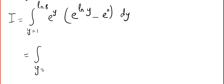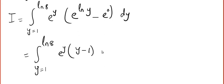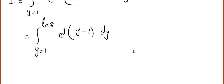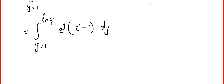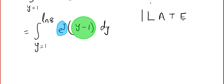That becomes the integral from y=1 to ln8 of e^y. Now, e and ln together create the identity function: e^(ln y) = y, and e^0 = 1. So we get integral of e^y · (y − 1) dy. I can see a product here, and you might have learned integration by parts and something called ILATE.